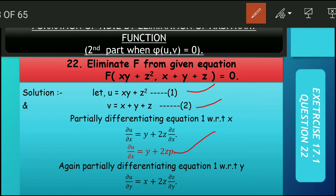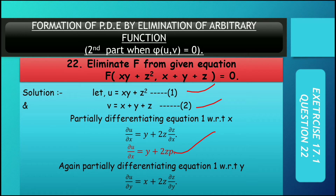यहाँ आप आसानी से निकाल सकते हो — partial differentiation का concept बहुत आसान है। Lecture 1 और lecture 4 में अच्छे तरीके से समझाया हुआ है। एक बार समझा रहा हूँ — du/dx क्या होगा? y + 2z(dz/dx)। यहाँ x एक variable की तरह काम करेगा और y constant है। Partial differentiation का मतलब ही है — जिसके respect में differentiate करो, वही variable काम करेगा; बाकी सब constant होंगे।